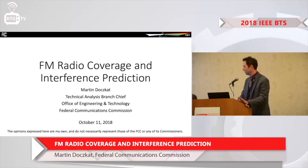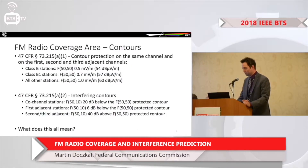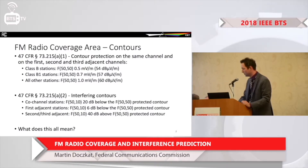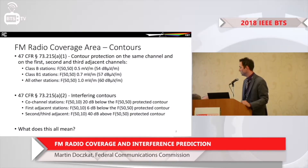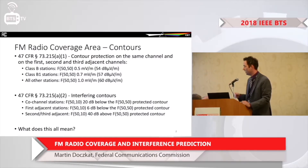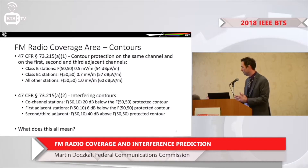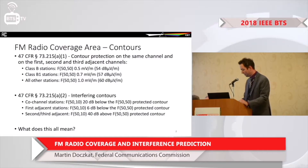Just a disclaimer: anything I say today isn't necessarily the view of the commission. So, quickly — rules you're probably all familiar with are the 73.215 protections. The bottom line: there are different protections for different classes of FM stations, and all coverage and protections are based on F50/50, while all interfering thresholds are based on F50/10.